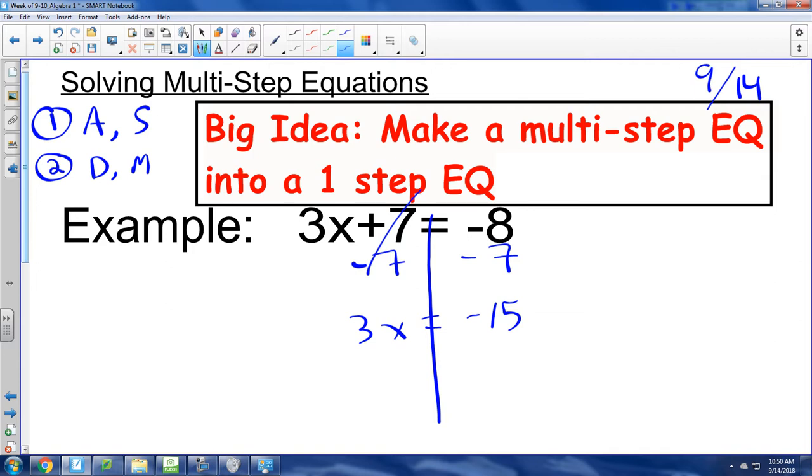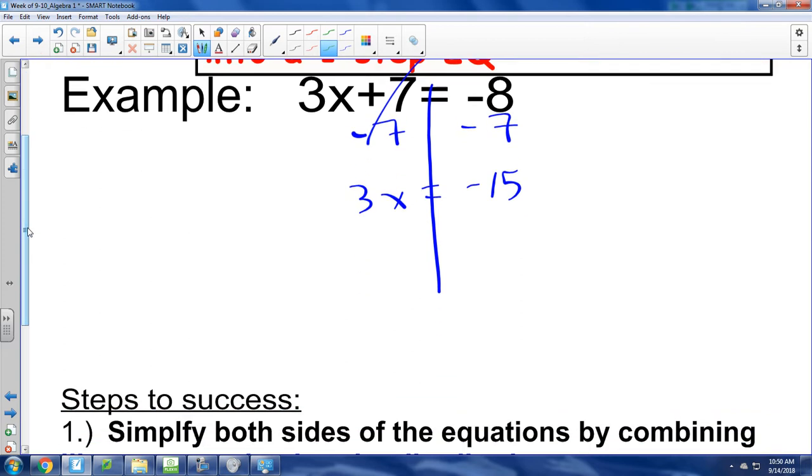So you divide three on both sides. Perfect. So we have 3x, that's three times x. We want to do the opposite of multiplication, so we want to use division to cancel out that. So we're going to use division of three on the left. If we do division of three on the left, we have to do division of three on the right. Right side. Very good.